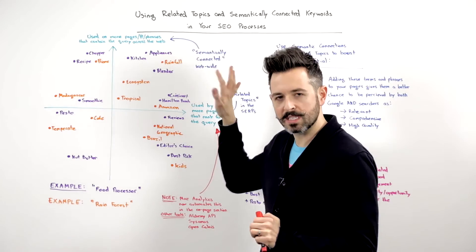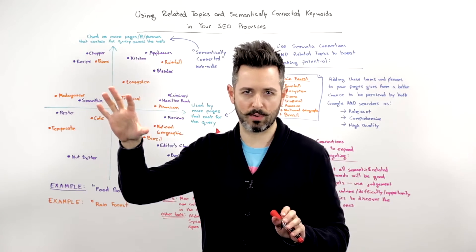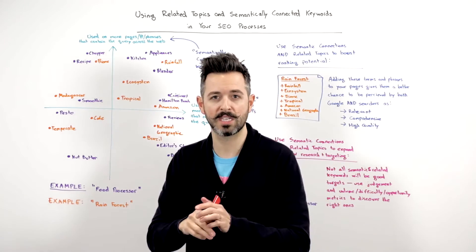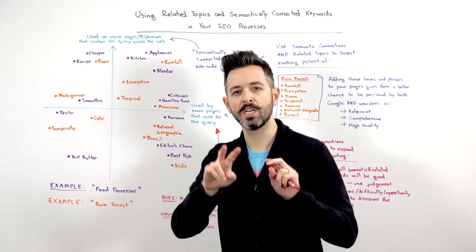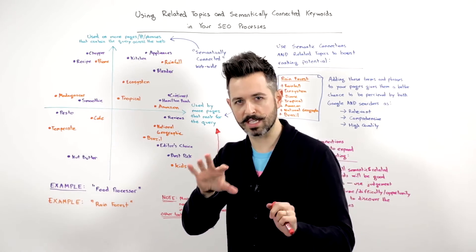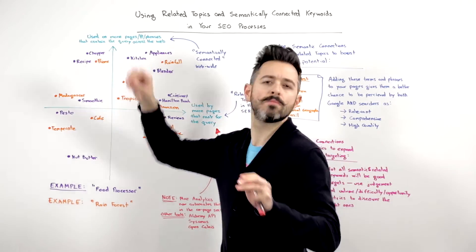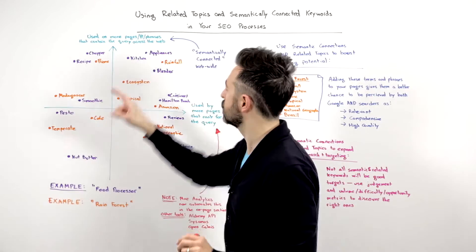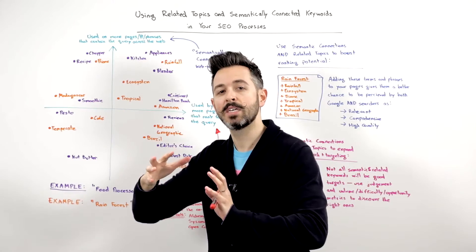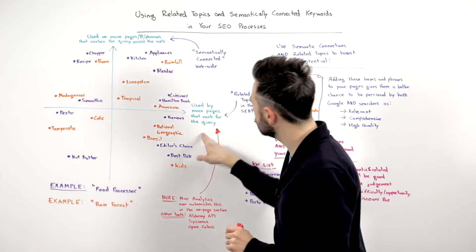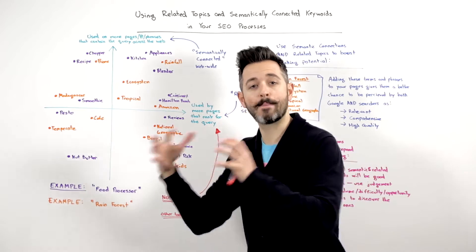When I say related topics and semantically connected keywords, I'm not actually talking about the things that you would find through a traditional keyword research process. This is really trying to define two different unique kinds of use cases or extractions for keywords: what are unique words and phrases that are used on more pages and paragraphs across the web that contain the query you're going after, and what are terms and phrases that are used by more pages that rank for that particular query?